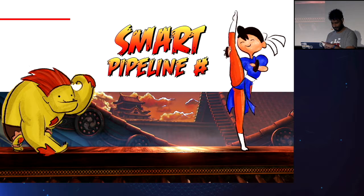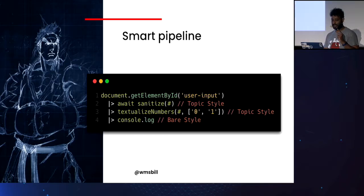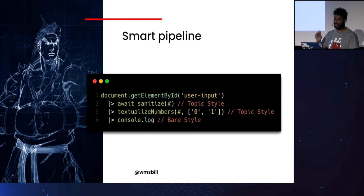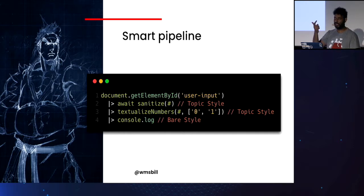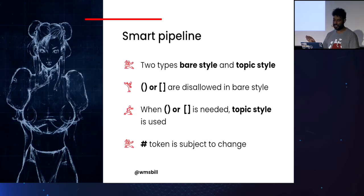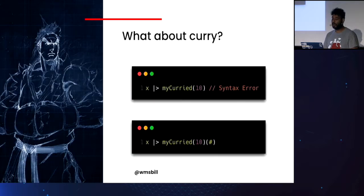First, I want to present the Smart Pipeline proposal. In Smart Pipeline, the previous example could be written with two styles: the bare style and the topic style. Whenever you just need to call a function straightforwardly with one parameter, you use the bare style. Whenever you need curly brackets or parentheses, you use the topic style, and you have the `#` token as a placeholder for the result of the previous step. Basic rules: two styles. Whenever you use parentheses, you must use the topic style — otherwise you get a syntax error.